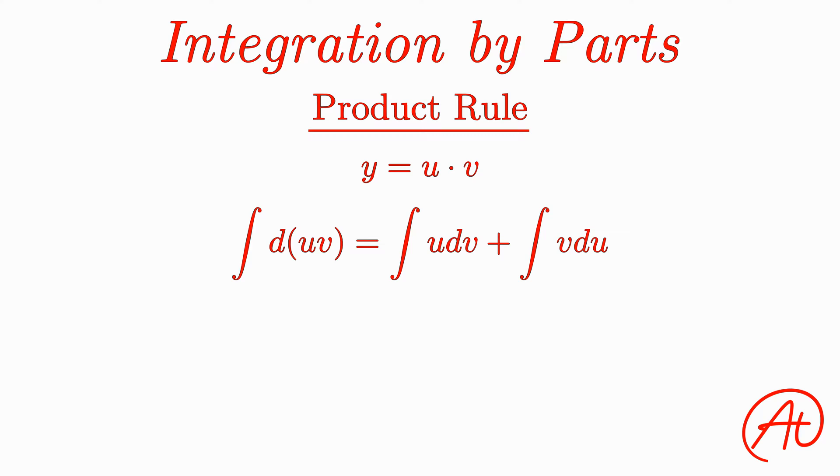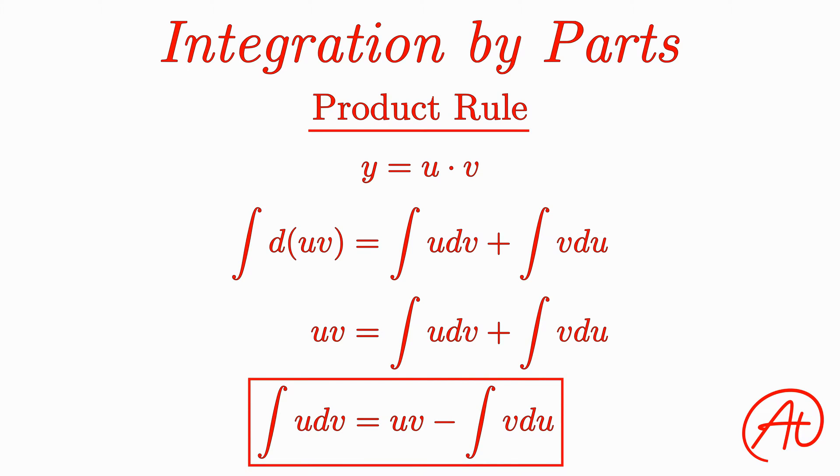Unfortunately, the only one of these that we can actually solve is the one on the left, which is simply uv from the integral power rule. Then let's subtract both sides by the integral of v du to get one integral on each side. Finally, let's just swap the two sides of this equation so that we are left with the integral of u dv is equal to u times v minus the integral of v du.